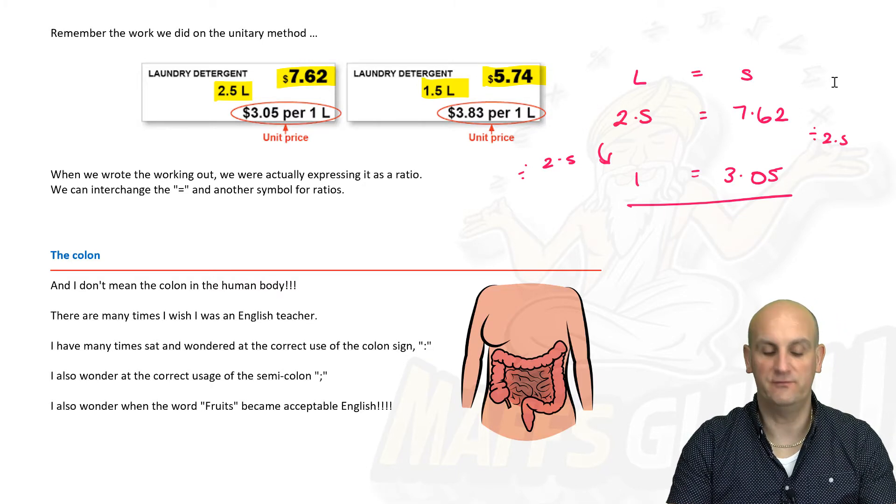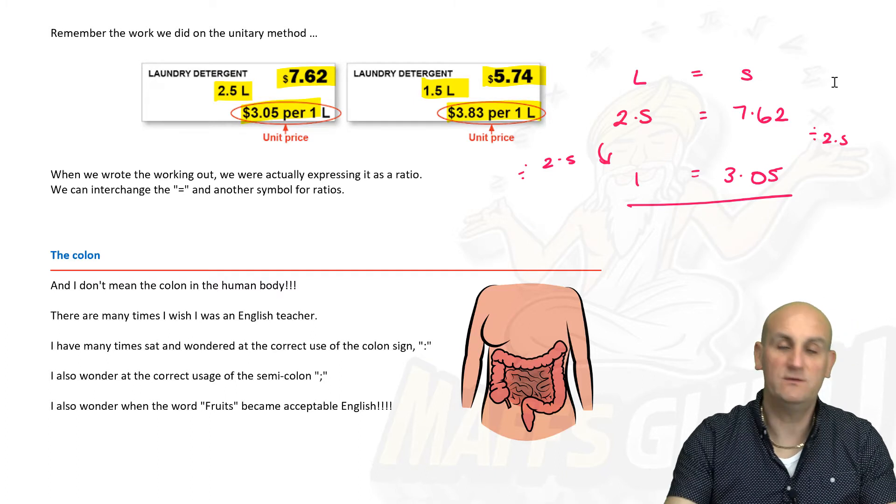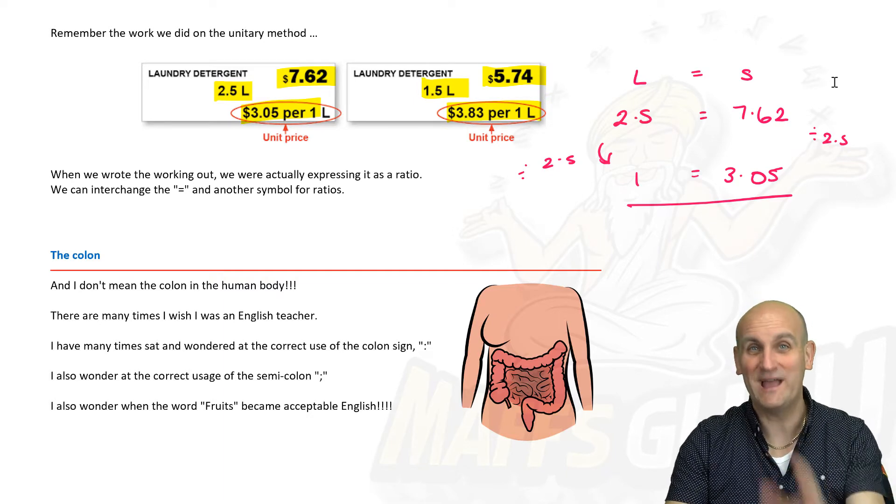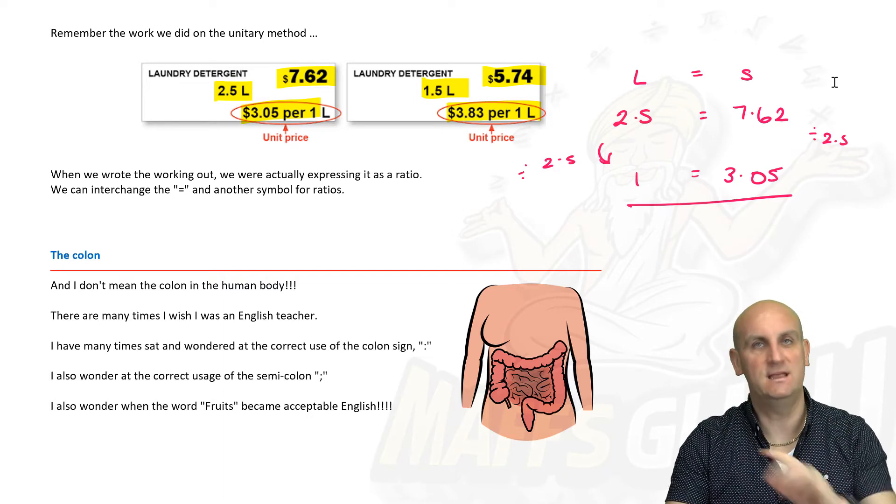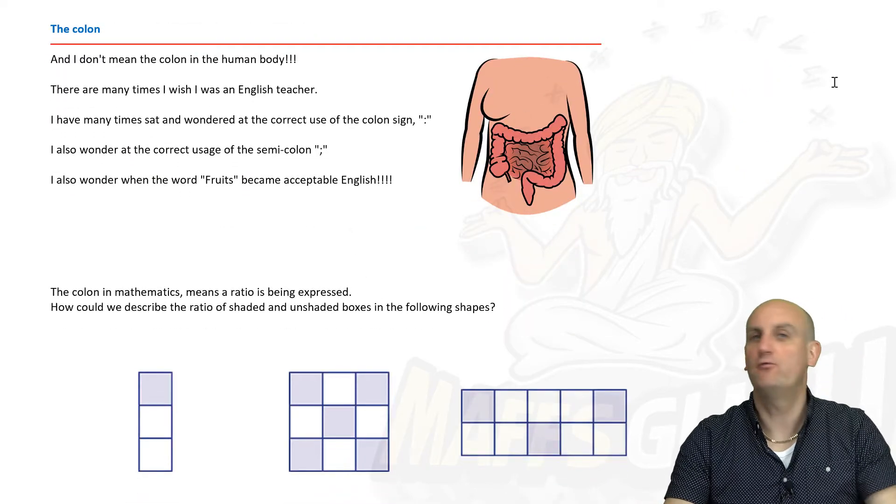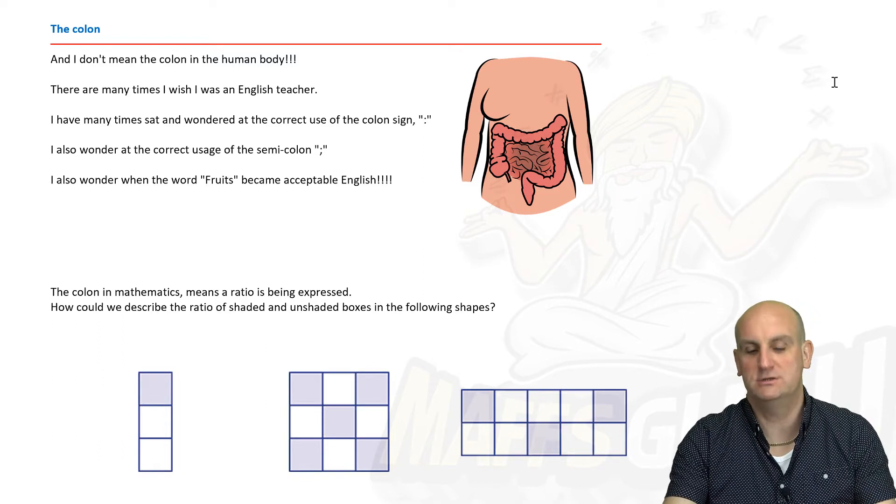Now obviously in this situation, three dollars and five cents per liter seems to be better than three dollars eighty-two. So if you haven't watched the video on unitary method, go back, have a watch. It'll make this so much easier. Now I was going to show pictures of a real colon, but actually I got a bit nauseous when I did that. I thought I'd probably just do a picture of like a cartoon colon.